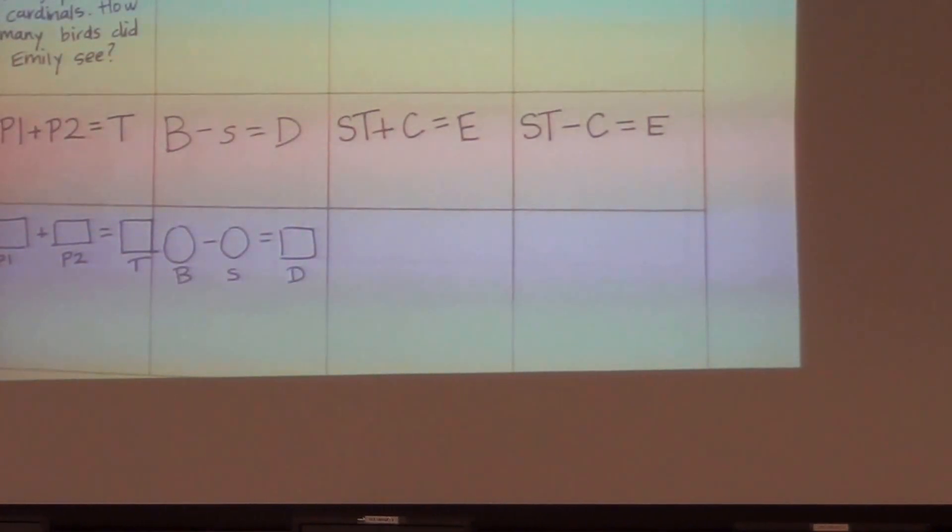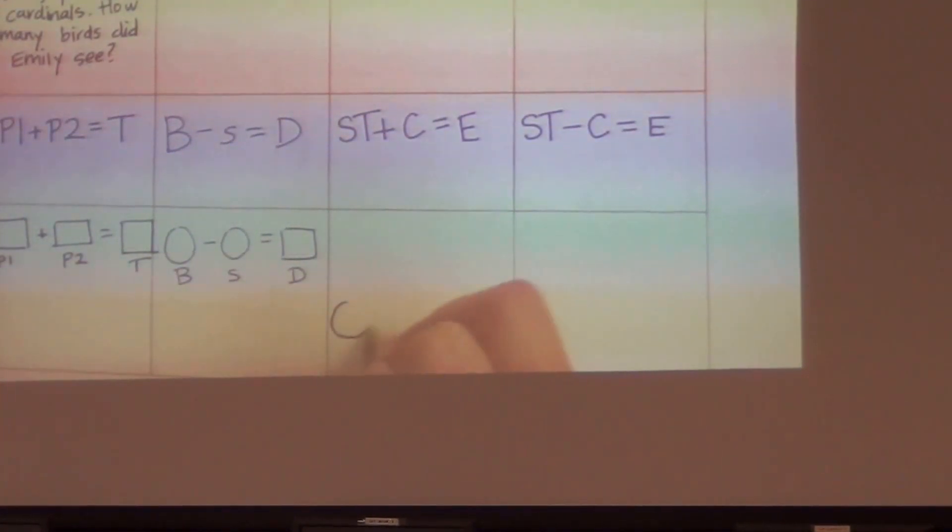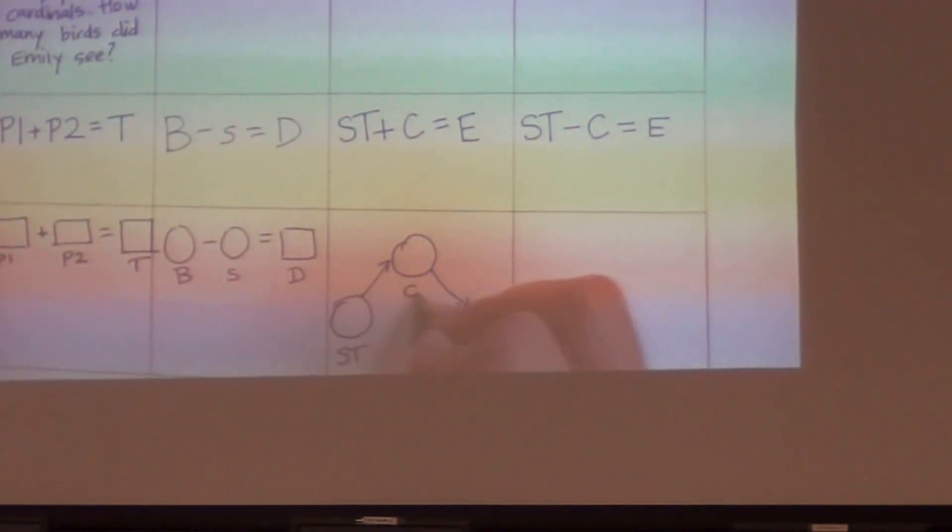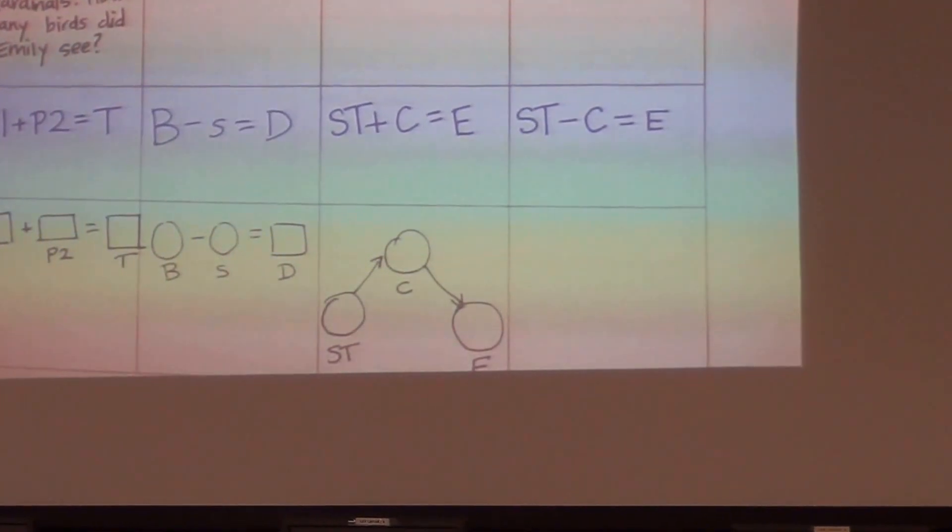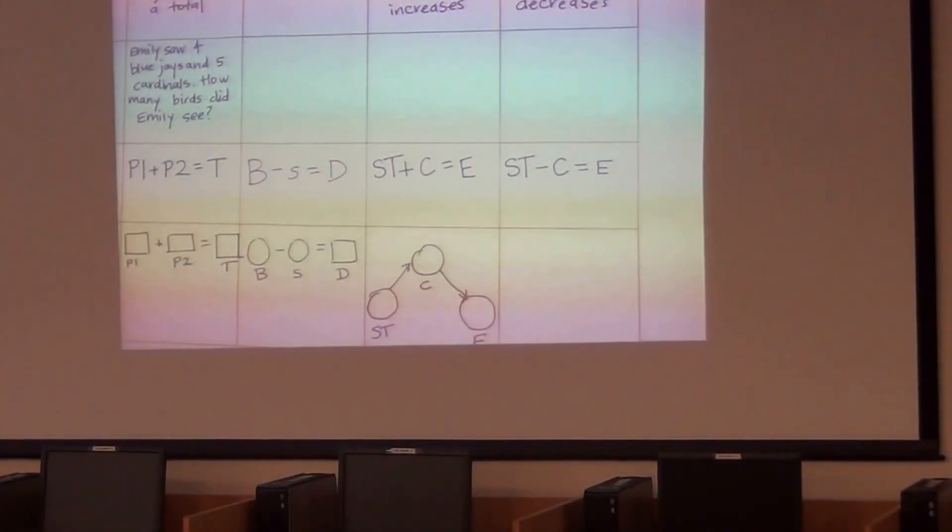Then I can use a graphic organizer here. This looks a little different: circle, arrow, circle, arrow, circle. That's the start, the change, and the end amount. And I can use the same graphic organizer for the change decrease.